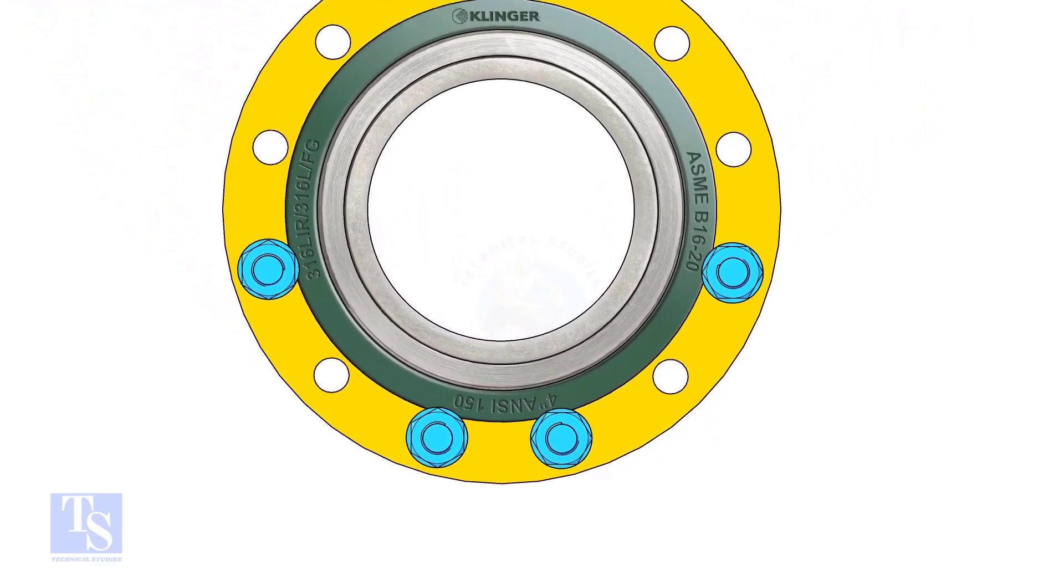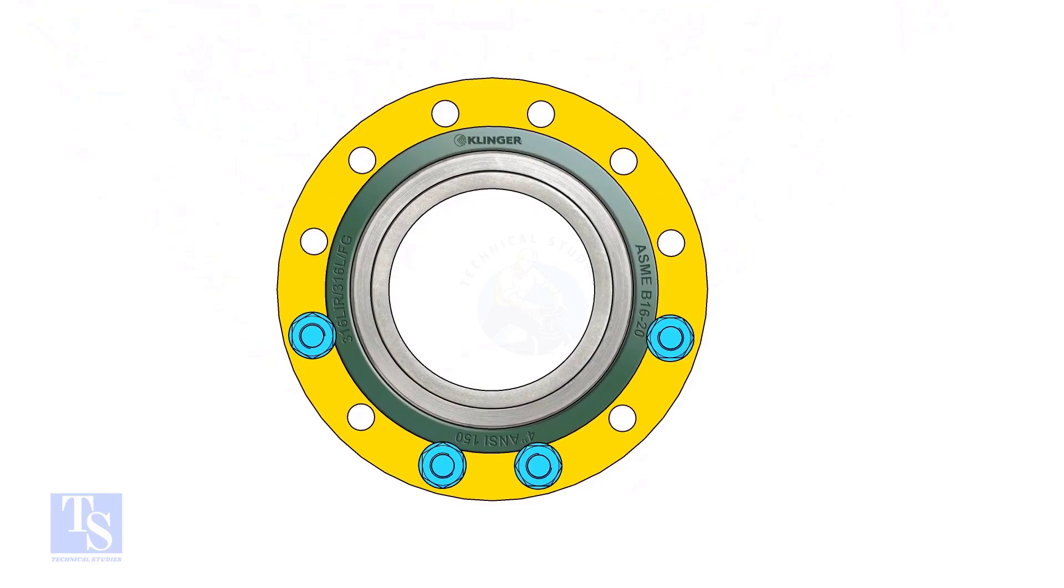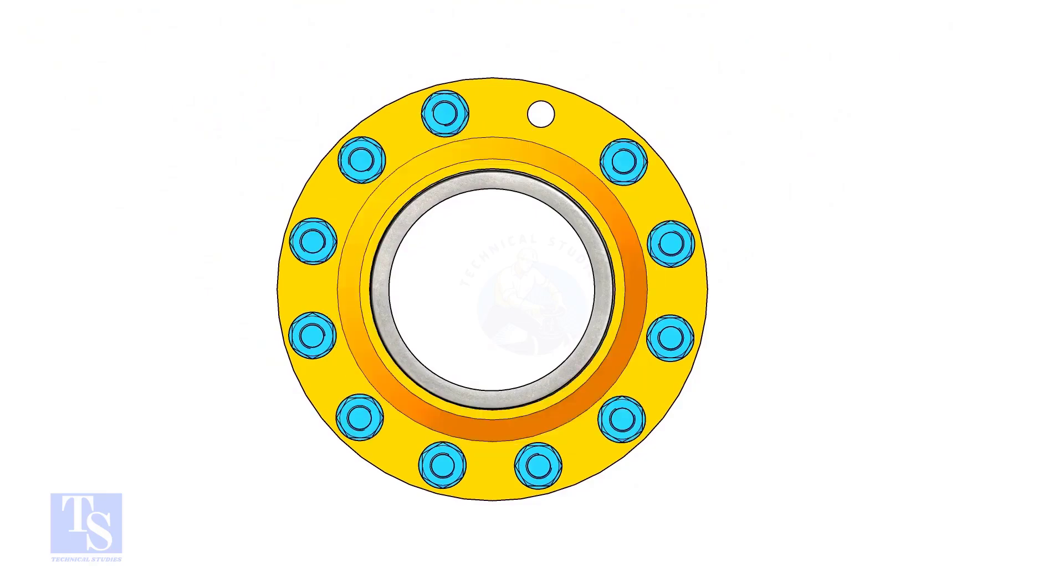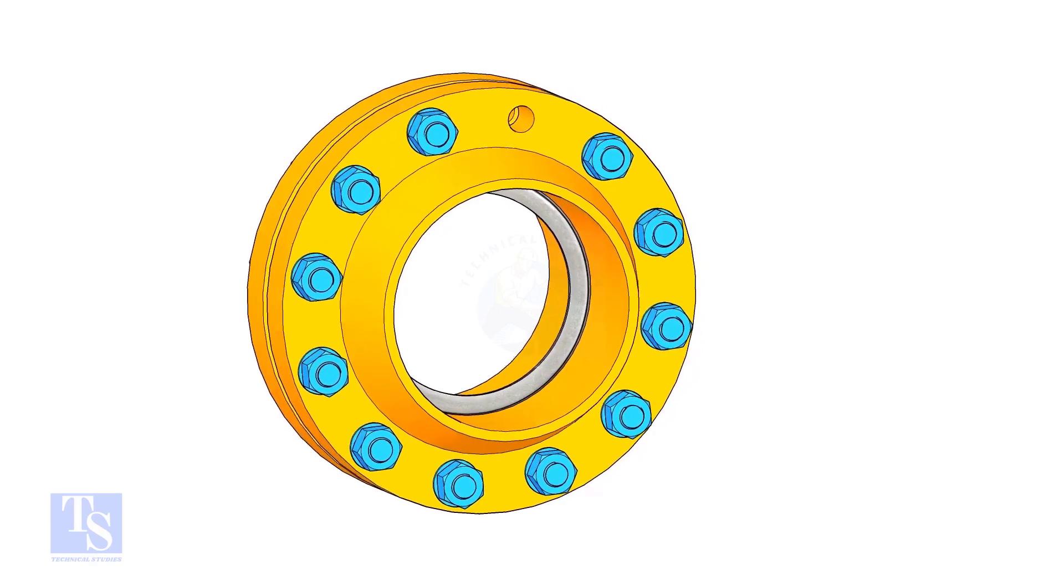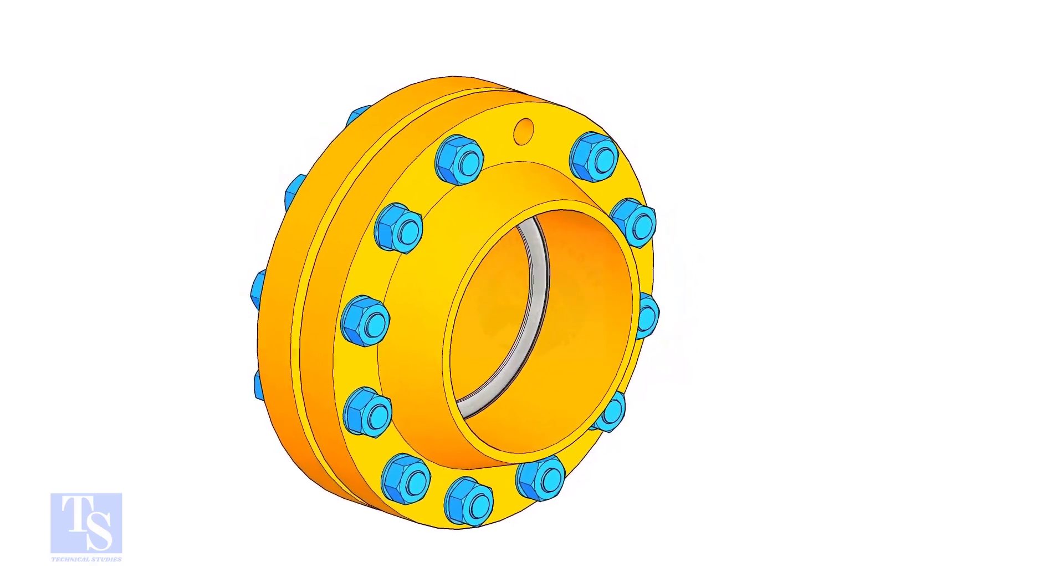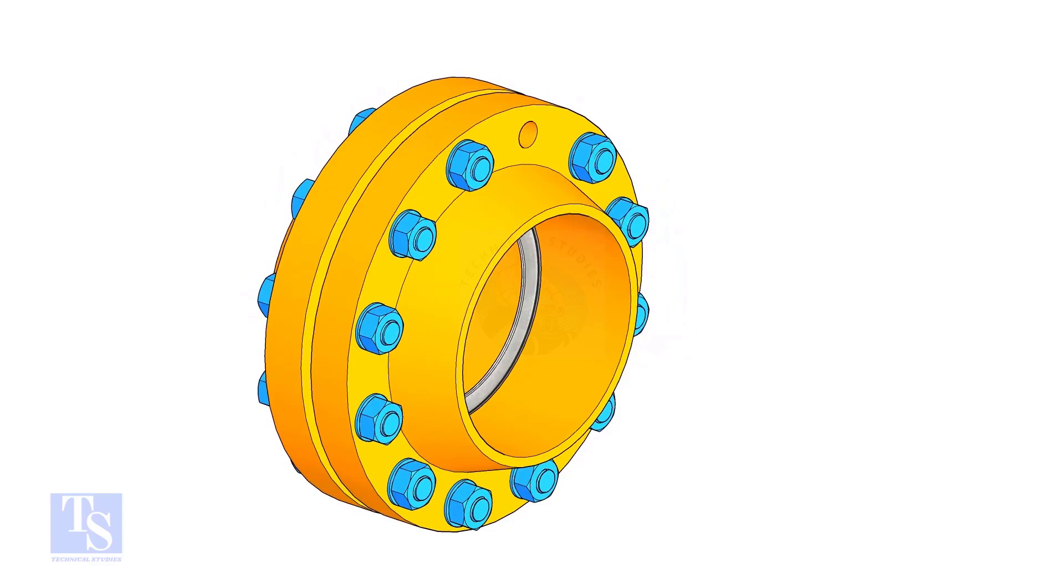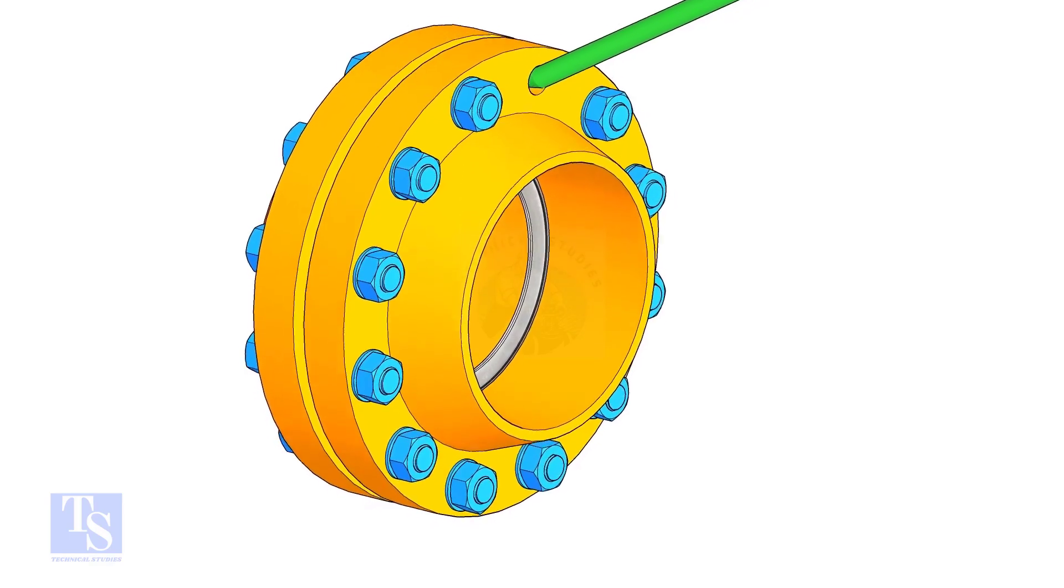Put the remaining bolts, as per the shown sequence. Use a liver bar to align the holes and the outer face of the flanges. Now, lift the gasket to its position, you can use a piece of welding rod.